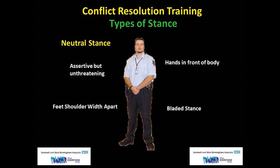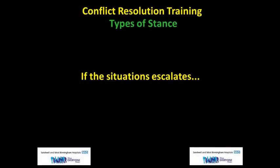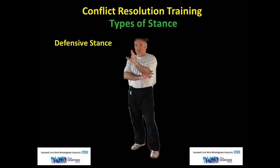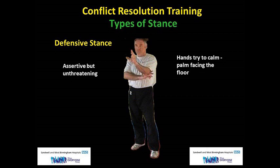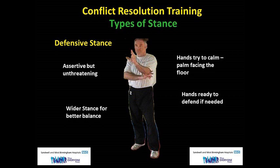If a person is angry or upset, in this position we have our hands safely in front of us — we are not pointing at them nor showing hostile gestures. In the event of a sudden change in aggression, we could still protect ourselves very efficiently from this position. If the situation escalates, we can move to defensive stance — still assertive but unthreatening, hands used to try and calm somebody down. Importantly, we do not show our palm to the person's face; our palm should point towards the floor as though we are bouncing a basketball. Our stance should be slightly wider for better balance.